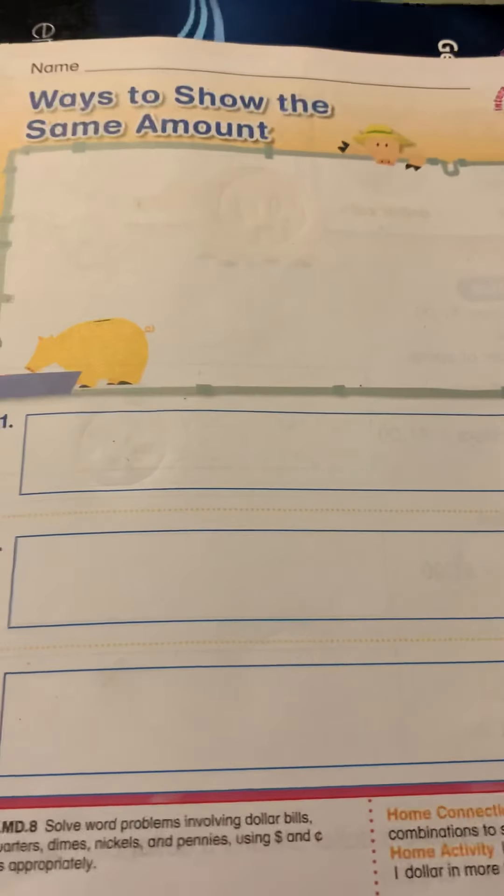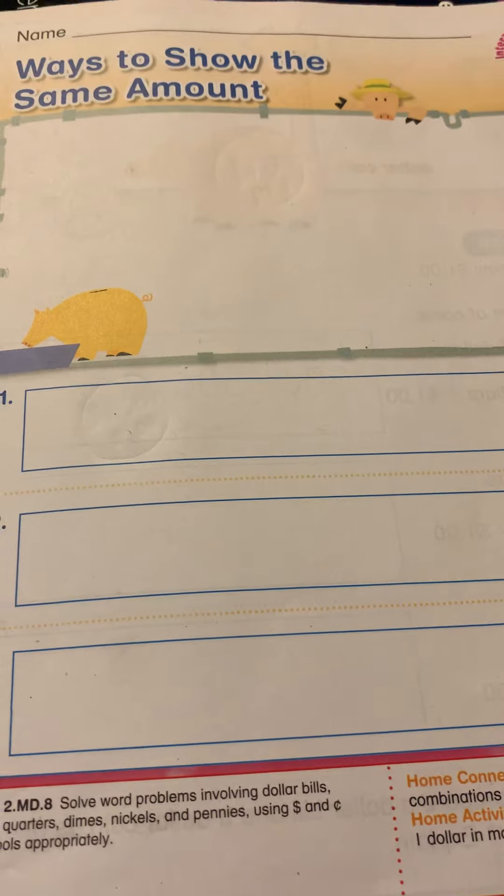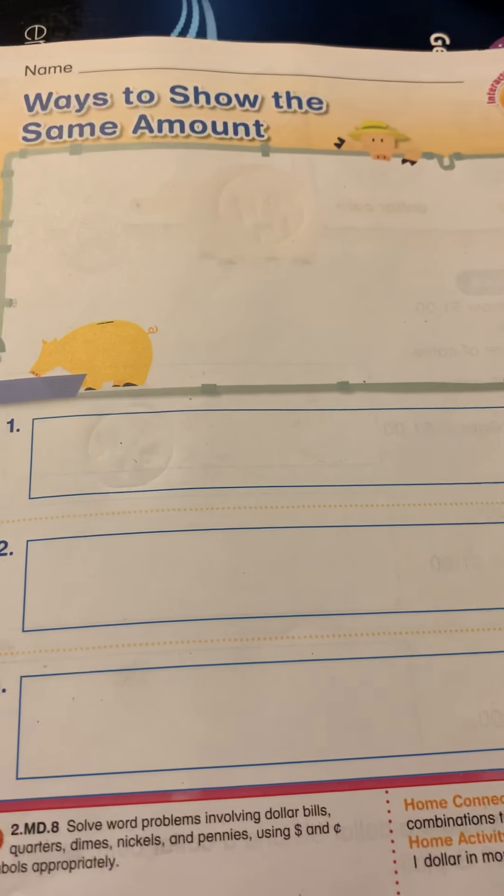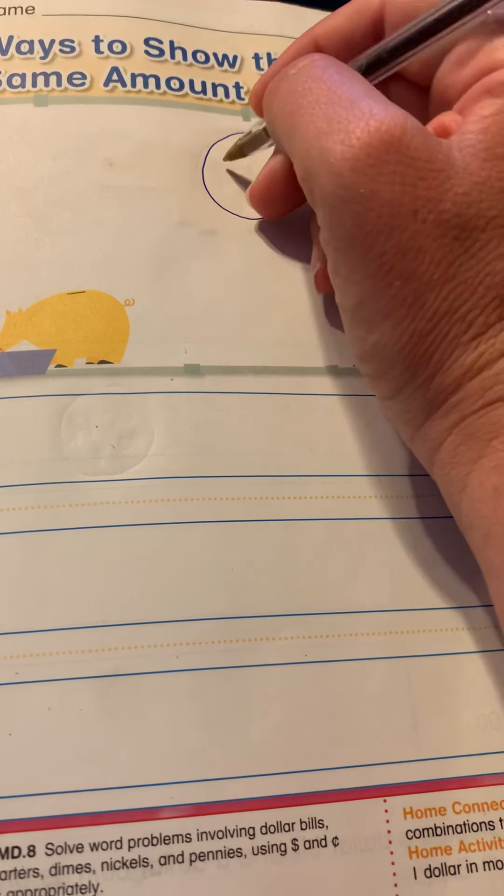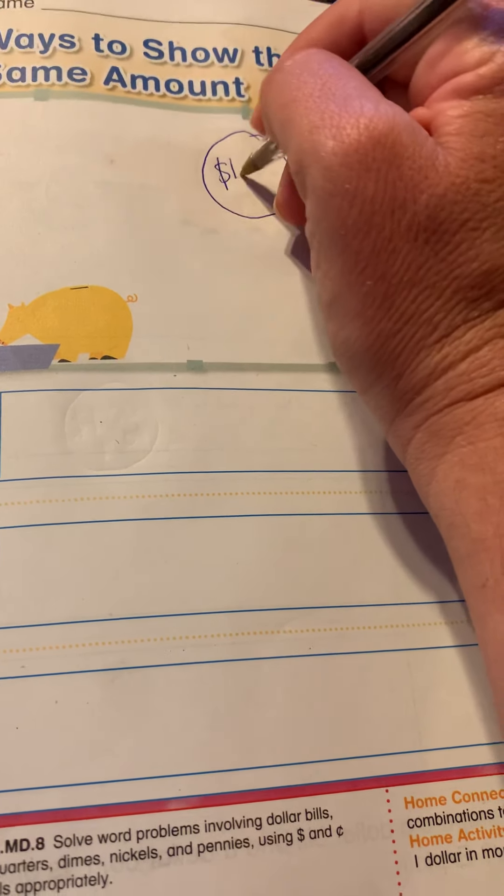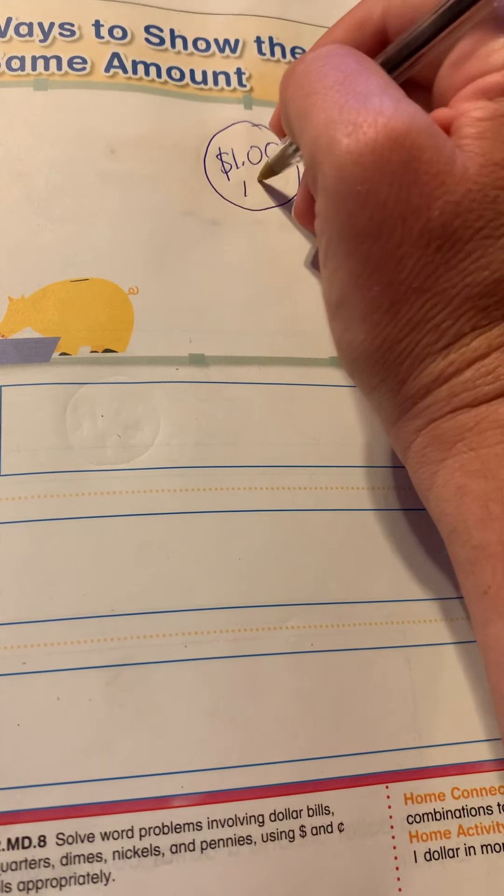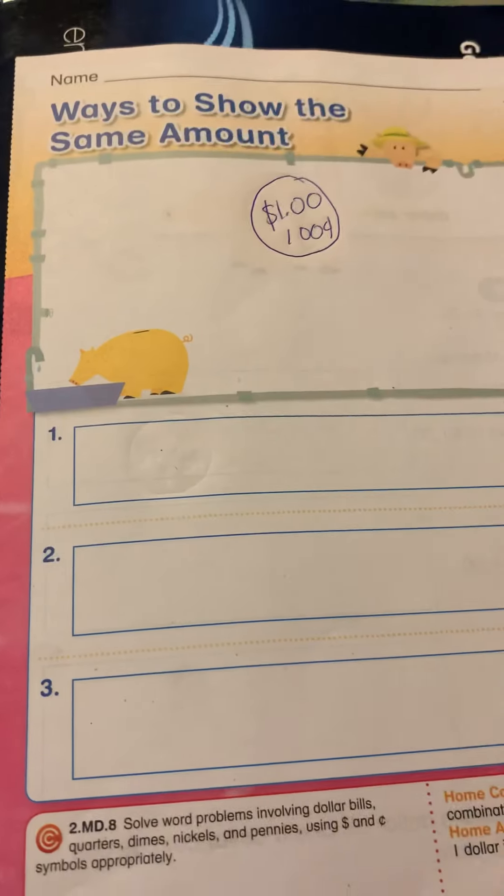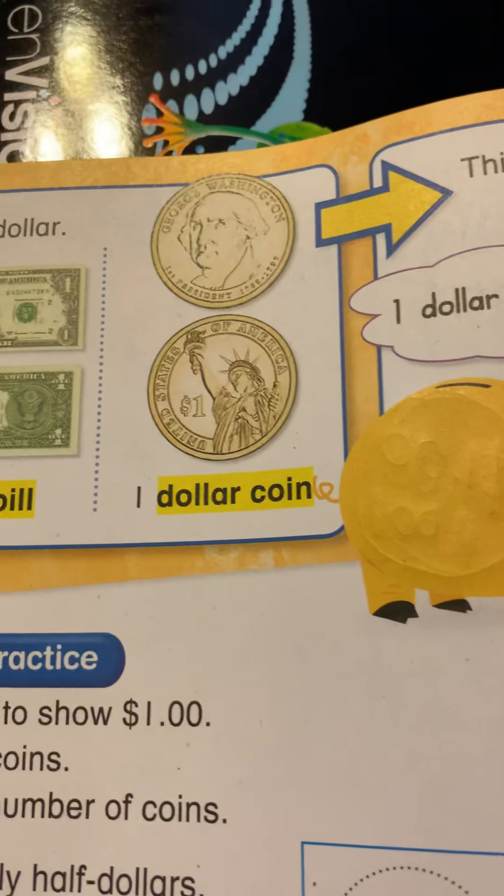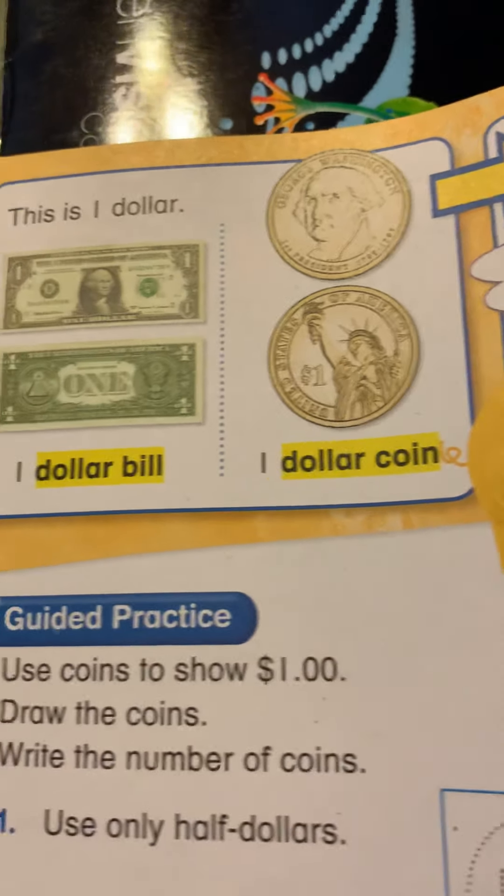Okay, we are on 13-3 which is ways to show the same amount. I want to show you guys something before we start. There is one more coin we didn't talk about yesterday and it's a gold coin worth one dollar or a hundred cents. I'm going to show you on the inside what the coin looks like because you don't see it very often. That's the dollar coin. There's the dollar bill and that's the dollar coin.